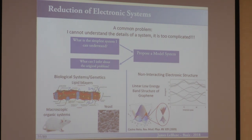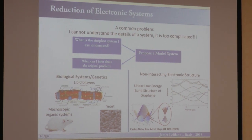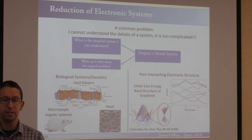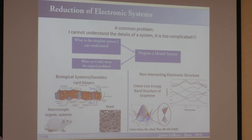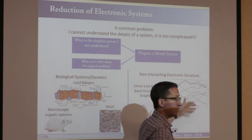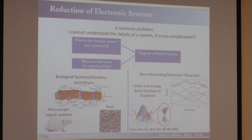People do this all the time in biology — they take complicated lipid bilayers and throw out most of the junk in them, keeping only the components they're interested in. People do this in electronic structure, where you focus only on the low-lying bands. Lichtenstein showed some of this: band structures for graphene that around some specific point in momentum space have a cone structure. You can get very far in graphene by throwing out all the high-energy bands and only focusing on the low-energy band, replacing the Hamiltonian with an effective Hamiltonian. A lot of the physics works out fundamentally correct.